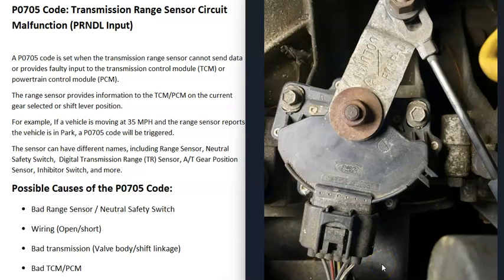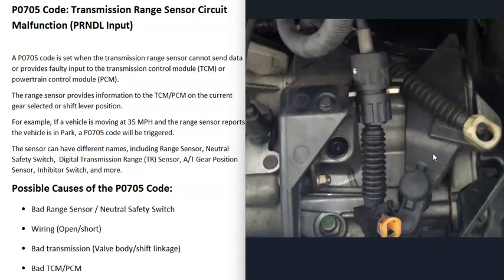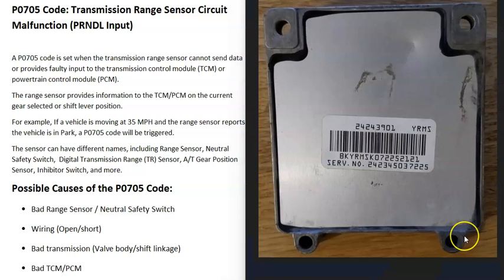Check the wires going back to the computer — the TCM or PCM — and make sure there are no issues there. The next possible cause is something going on inside the transmission, such as an issue in the valve body, or problems with the shift linkage going to the transmission. If the linkage got bent, or inserts fell out, it could prevent the linkage from being pushed down correctly.